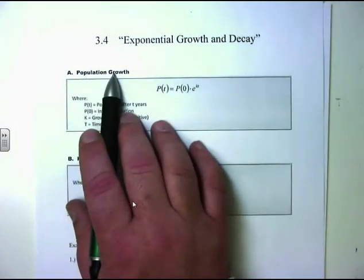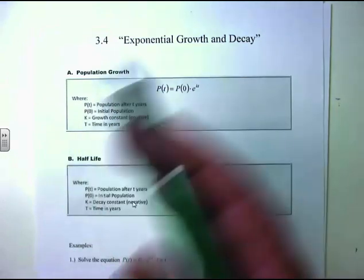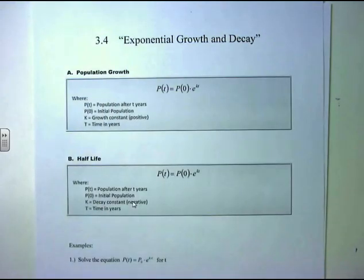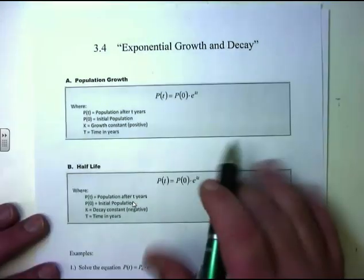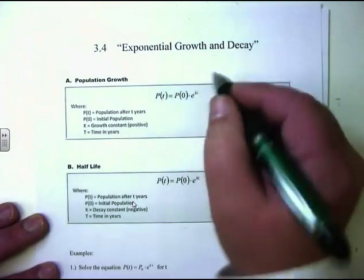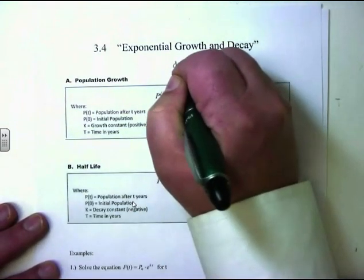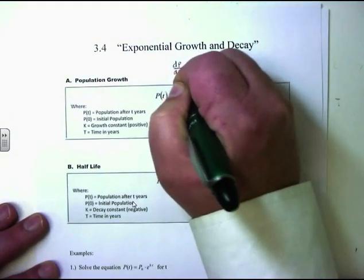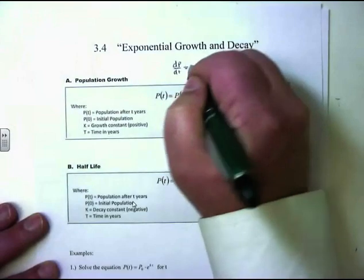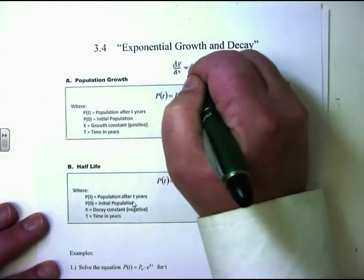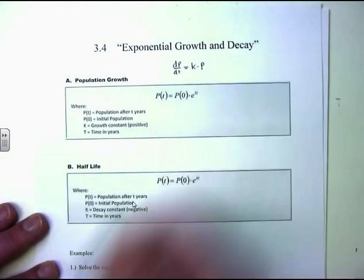When you have a population growth, the formula comes from the fact that population grows at a rate proportional to itself. That gives you something called a differential equation. The rate of change of the population, which is the derivative dP/dt, is equal to — proportional to — some constant K times the population P.